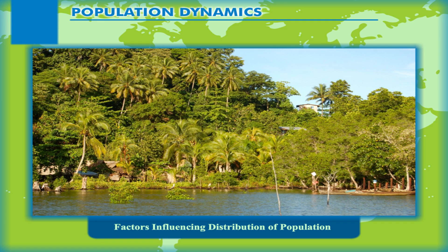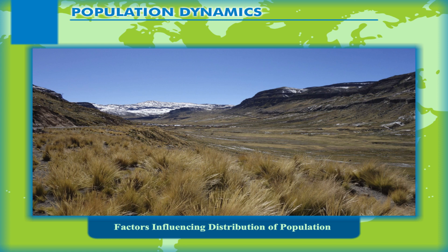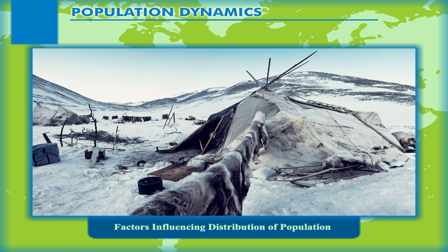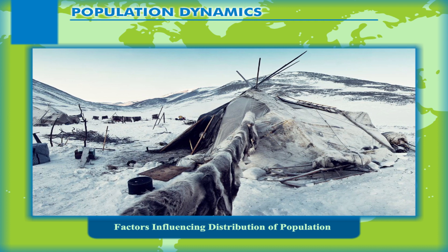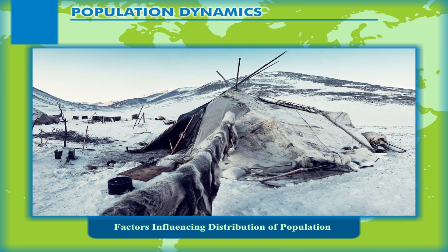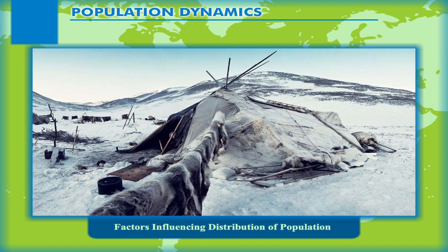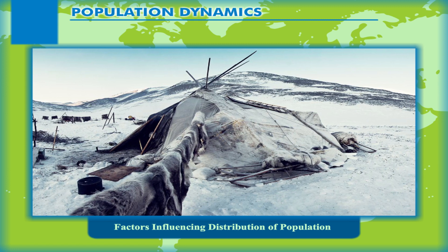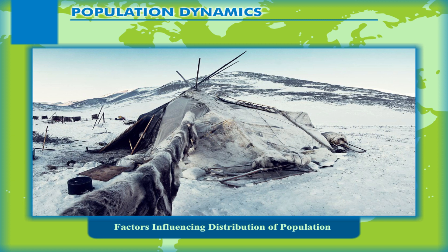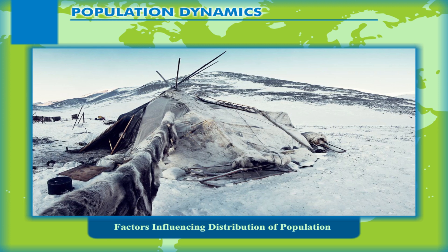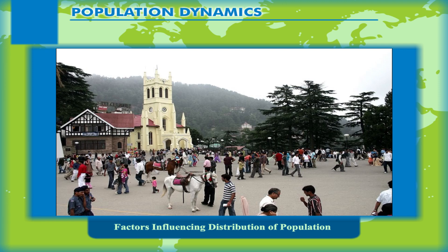Climate is another important factor affecting distribution of population. Regions that are very hot or very cold, or either too wet or too dry, are usually avoided by people. This is why the equatorial region of Africa, the polar regions of Russia, Canada and Antarctica, the Arctic region, and the region of Ladakh in Kashmir are very sparsely populated. On the other hand, a moderate or mild climate attracts people to settle, and the temperate and subtropical areas of the world are densely populated.